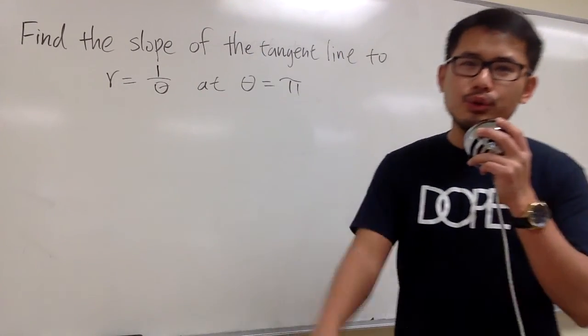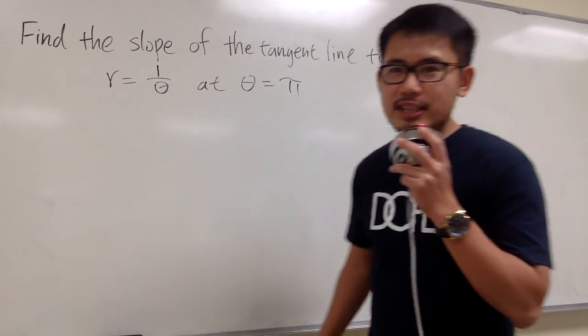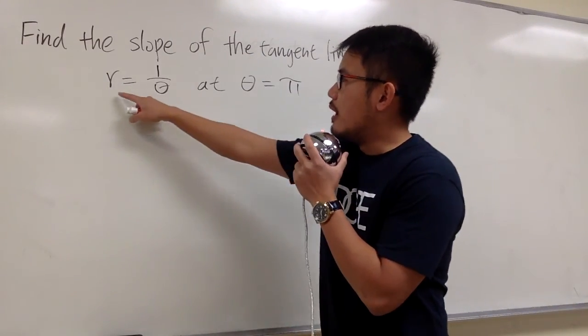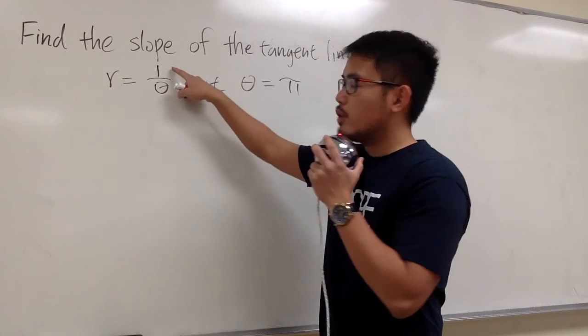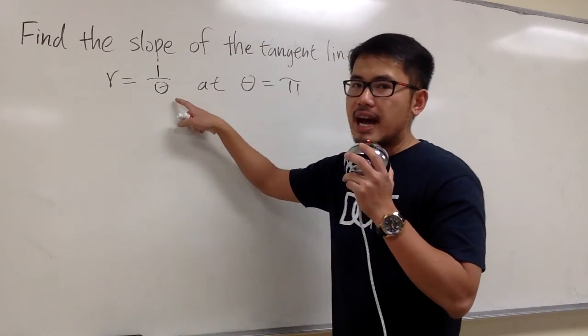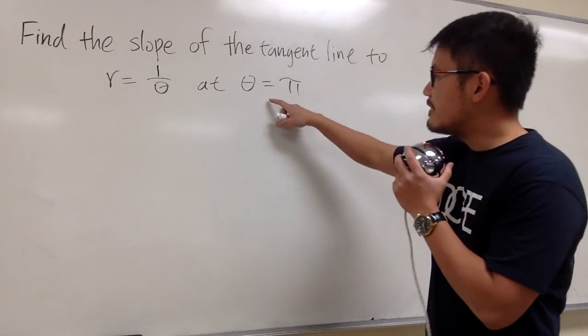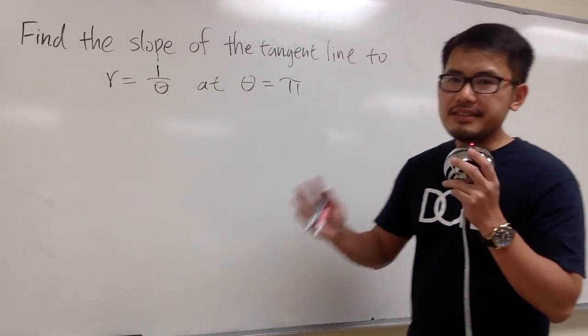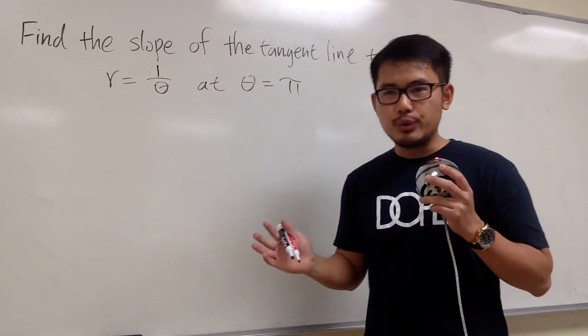Cassie, this video is for you! We are going to find the slope of the tangent line to the polar curve r equals 1 over theta at the theta value pi. And this is how we should do it.